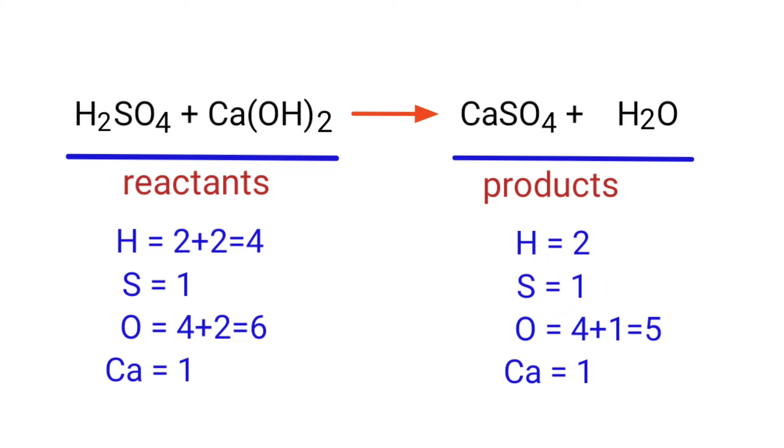The number of atoms are not balanced on both sides. To balance the chemical equation we need to make use of coefficients. A coefficient is a number that we place in front of a chemical formula.